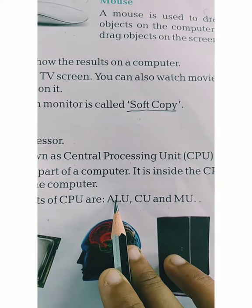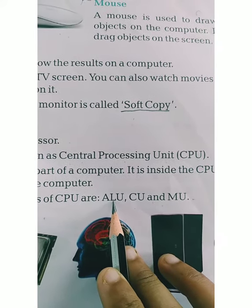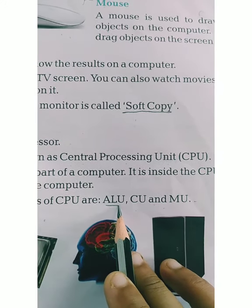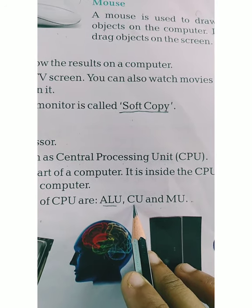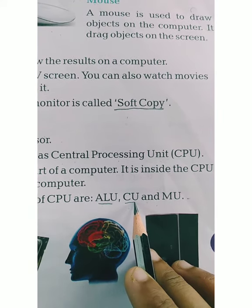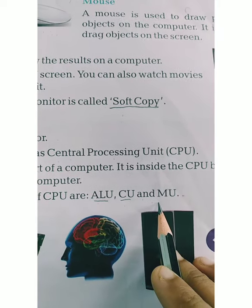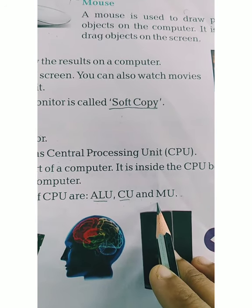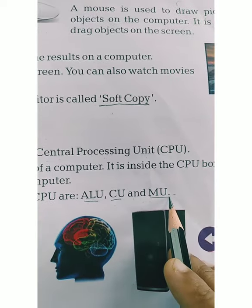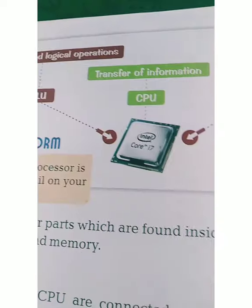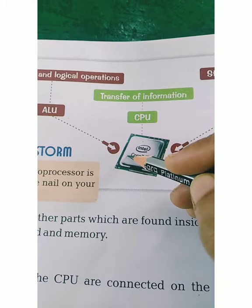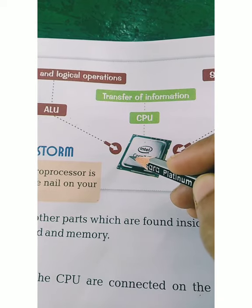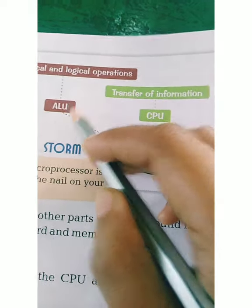ALU means Arithmetic Logical Unit. Mathematical operations are performed by it. CU is the Control Unit, and processing is controlled by this unit.